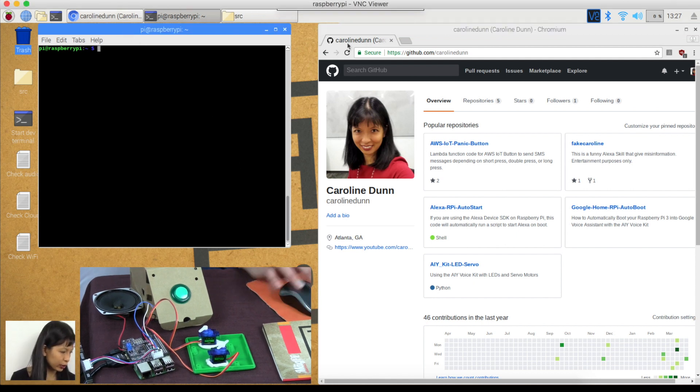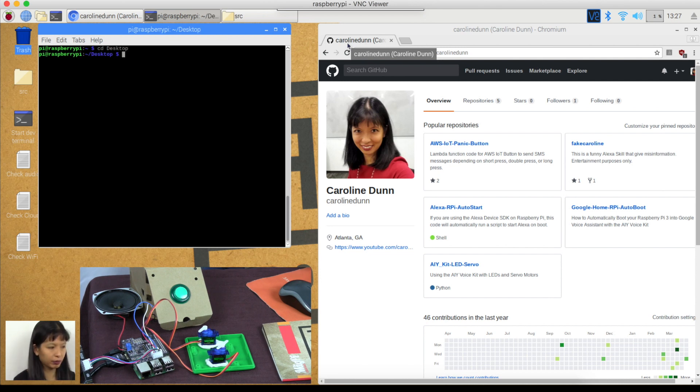And what we're going to do is we are going to cd into desktop. Now, you really could put this anywhere you want to put this. And we're going to open up a text editor, sudo, nano, src. And we're going to call the servo.